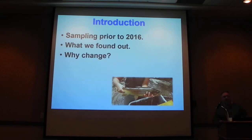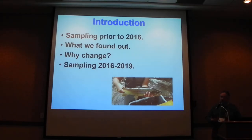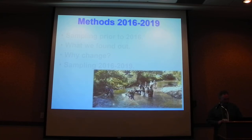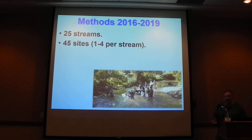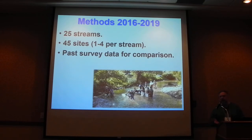So why change things? We wanted to get a better idea of the trends in the trout populations. Starting in 2016 through this past sampling year, we started doing our sampling much more region-wide. From 2016 to 2019 we were sampling on 25 streams, 45 sites total — about the same number of sites as before, just spread over a lot more waters. We had one to four sites per stream, most streams one to two. All these sites had some past survey data to compare against, to start looking at long-term trends.